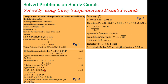For a solved problem on a non-regime unlined stable canal: discharge Q by V equals area. We design the most economical trapezoidal section. Express A and P in terms of B and D, fix the B/D ratio, find R as A/P, substitute into Basin's equation to get C, then use Chezy's equation V = C√(R·S) to find bed slope S. That solves the problem.